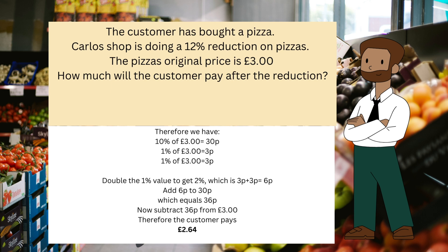We need to double the 1 percent to make 2 percent, which is three pence plus three pence, equalling six pence. Add the six pence to the 30 pence, which equals 36 pence. Now subtract 36 pence from three pounds. Therefore the customer pays two pounds 64 pence.